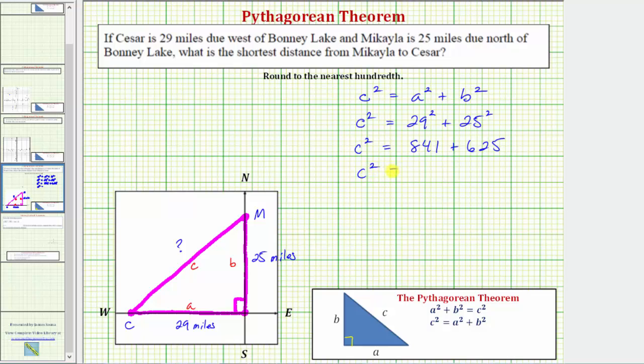And therefore c squared must equal this sum, which is 1466. And now to solve for c, we'll undo the squaring by taking the square root of both sides of the equation. So we'd have the square root of c squared equals the square root of 1466.